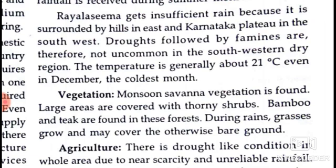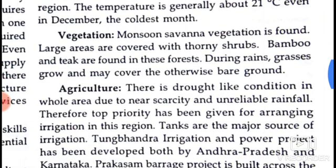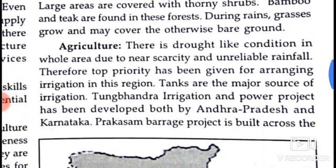The temperature is generally about 21 degrees centigrade even in December, making it the coldest month. Monsoon savannah vegetation is found here. Large areas are covered with thorny shrubs; bamboo and teak are also found in these forests. During the rains, grasses grow and may cover otherwise bare ground. Agriculture faces drought-like conditions due to scarce and unreliable rainfall.